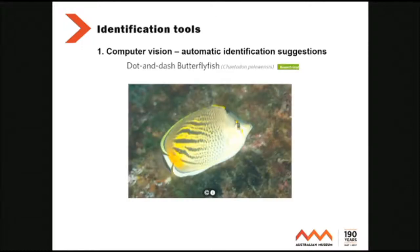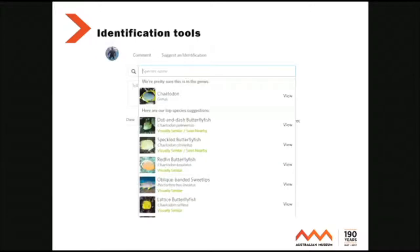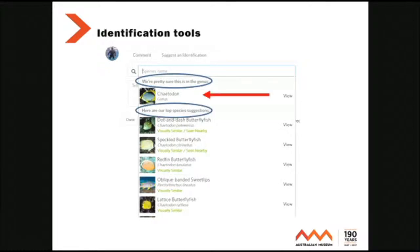Identification tools — computer vision. Remember the name Caetidon peloensis. When you get in and decide you're going to suggest an identification, the minute you click in there you get a prompt: we're pretty sure it's in this genus, Caetidon, here are our top species suggestions — peloensis. So the computer system has identified your species for you. It's pretty high-powered stuff, and it does that based on visually similar records and geolocation of fish records.